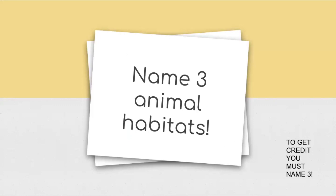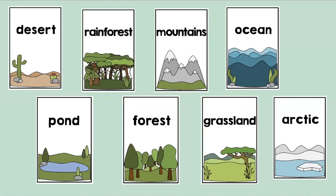Name three animal habitats. You have to name three to get credit. We learned about like eight of them this year. What are three animal habitats? Here's a few you could have chose from. The desert, rainforests, mountains, ocean, pond, forest, grassland, and Arctic. Wetlands was another choice you may have had. Any of those would have counted. Moving on.